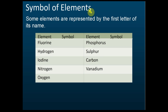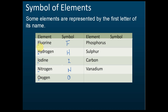Let's start with the first type of symbol. For some elements, the symbol is represented by the first letter of the name. For example, fluorine is represented by F, hydrogen by H, iodine by I, nitrogen by N, oxygen by O — it sounds very easy, right? You just take the first letter of the element as its symbol. Phosphorus is P, sulfur is S, carbon is C, vanadium is V.